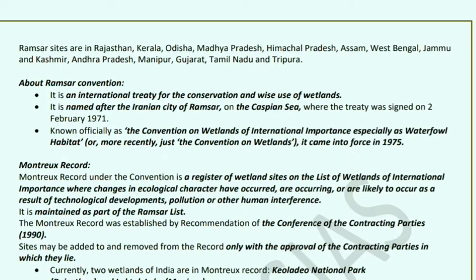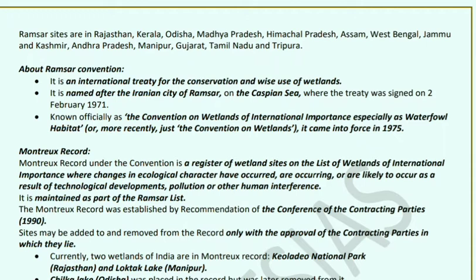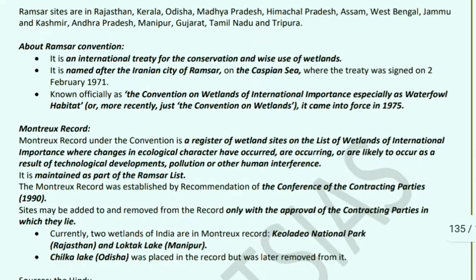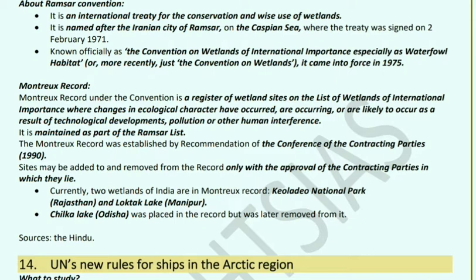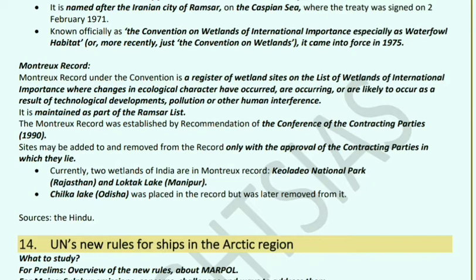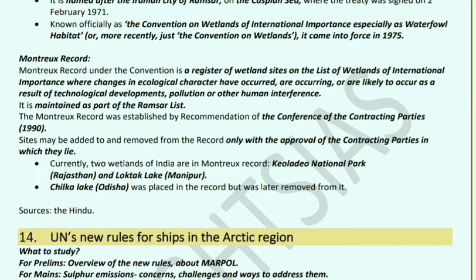The Ramsar Convention is an international treaty that conserves wetlands and promotes their wise use. It is named after the Iranian city of Ramsar on the Caspian Sea. The treaty was signed on February 2, 1971, and came into force in 1975. It is formally called the Convention on Wetlands of International Importance Especially as Waterfowl Habitat. The Montreux Record, part of this convention, lists wetland sites of international importance where changes in ecological character have occurred, are occurring, or are likely to occur due to technological development, pollution, or other human interference.